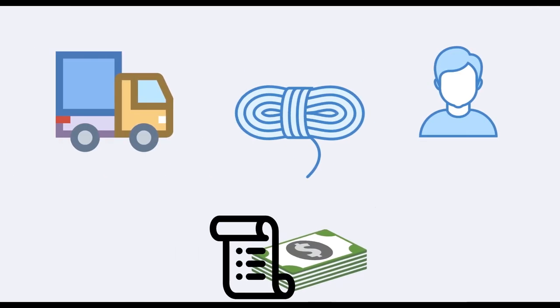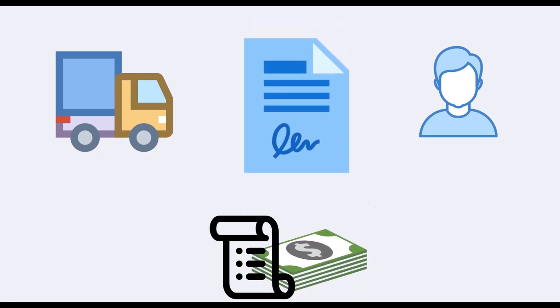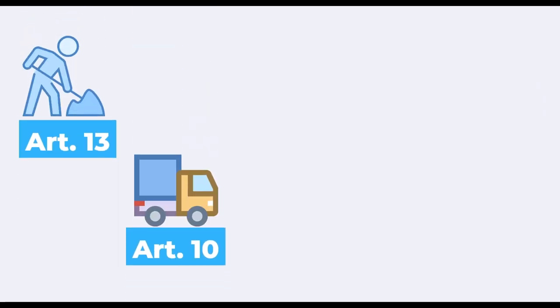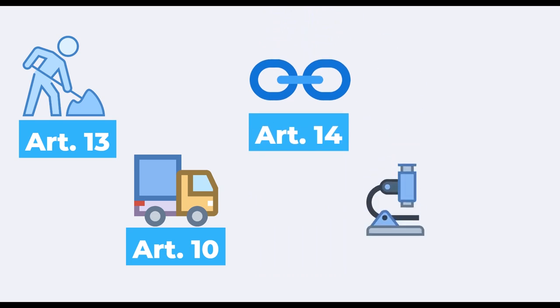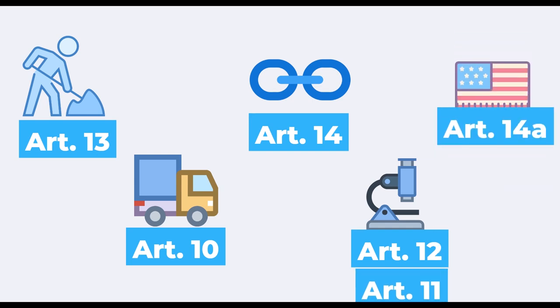The beneficiary should always conclude a legal contract with its third parties, specifying their rights and obligations, including intellectual property rights. In this case, we distinguish between the following types of third parties: a subcontractor, a contractor, linked third parties, third parties providing in-kind contributions either for free or against payment, and international partners without funding from the EU.